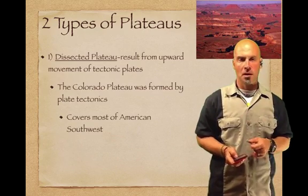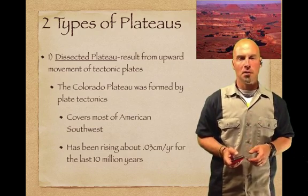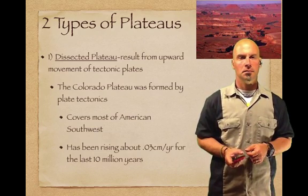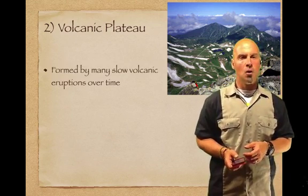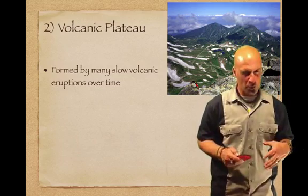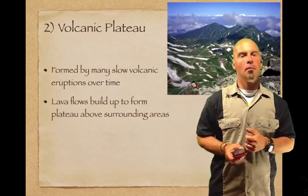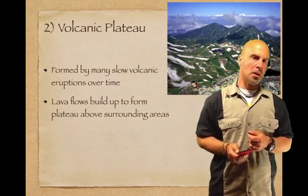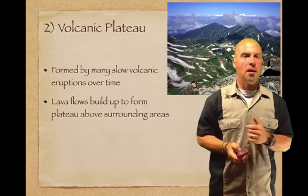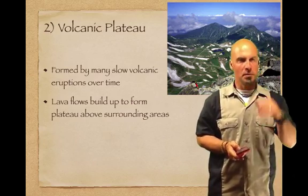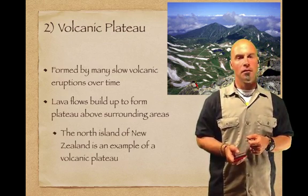The second type is the volcanic plateau, formed by many slow volcanic eruptions over time — not one big eruption, but lots of smaller, gradual ones. The lava flow builds up and forms plateaus above the surrounding area, easing out gradually and eventually rising above what surrounds it. The North Island of New Zealand is an example of a volcanic plateau.